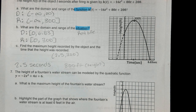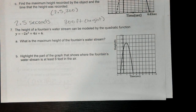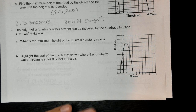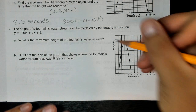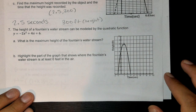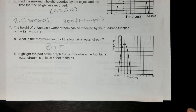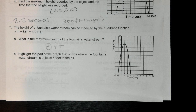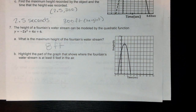For number 7, the height of a fountain's water stream is modeled by a quadratic function. The maximum height is at the vertex — looking at the graph comparing time and height, the maximum height is 8 feet. For part b, highlight the part of the graph where the fountain's water stream is at least 6 feet in the air.